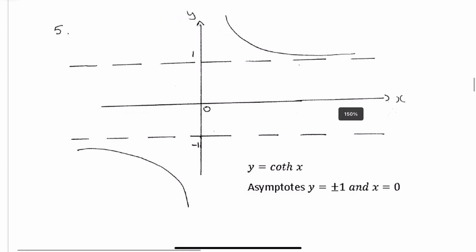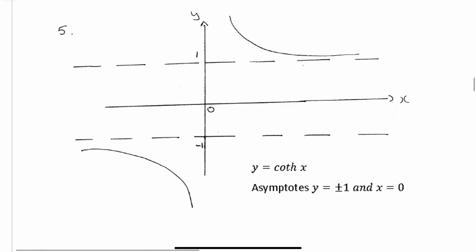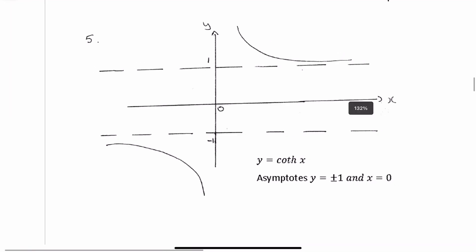Hyperbolic cot is a wee bit different — notice it has asymptotes at y equal to plus or minus 1, and x equal to 0. I would just learn that one off; it's quite a tricky one to derive.